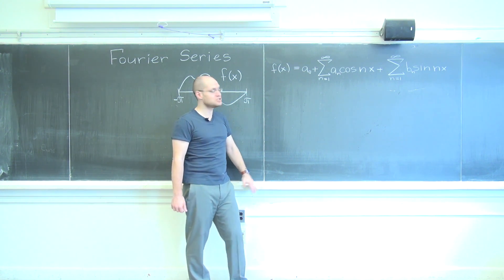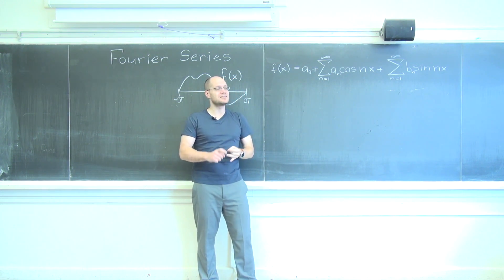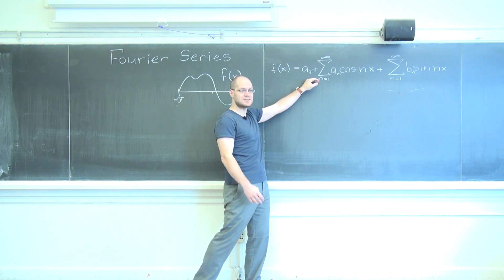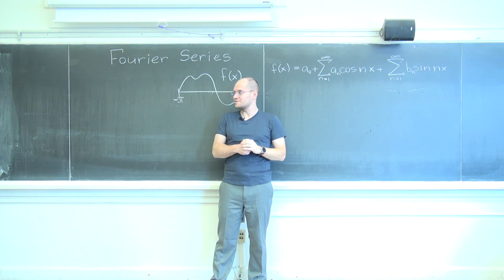And the other thing I'll mention is that you're seeing some bulk here. There's a0, there's a sub n's, there's b sub n's, there's sines, there's cosines, there's constant terms. It looks like a hodgepodge of a few things. Do you agree with me?